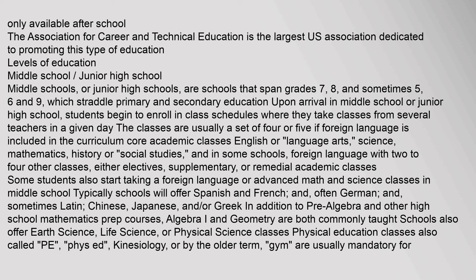Middle schools, or junior high schools, are schools that span grades seven, eight, and sometimes five, six, and nine, which straddle primary and secondary education. Upon arrival in middle school or junior high school, students begin to enroll in class schedules where they take classes from several teachers in a given day. The classes are usually a set of four or five core academic classes — English or language arts, science, mathematics, history or social studies, and in some schools foreign language — with two to four other classes, either electives, supplementary, or remedial academic classes.